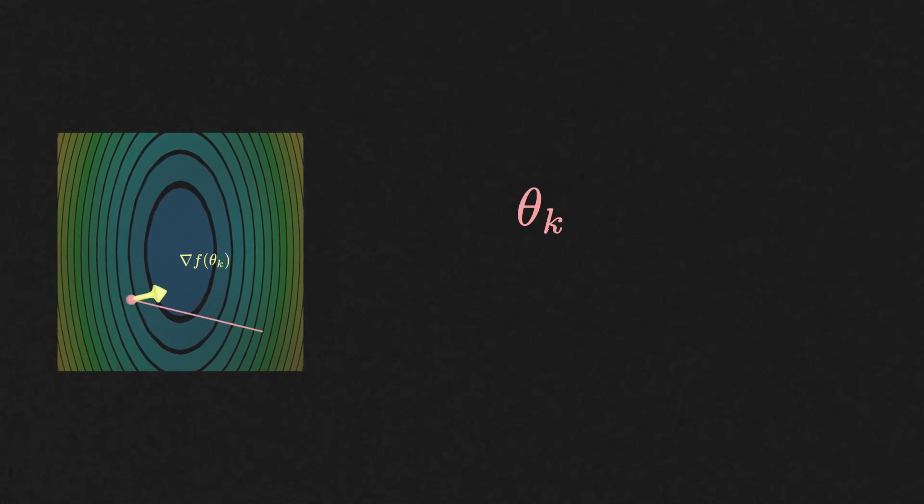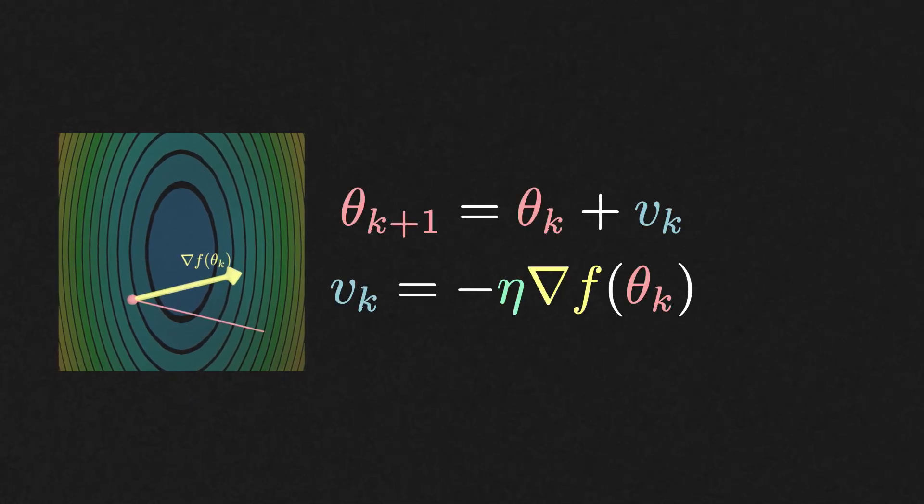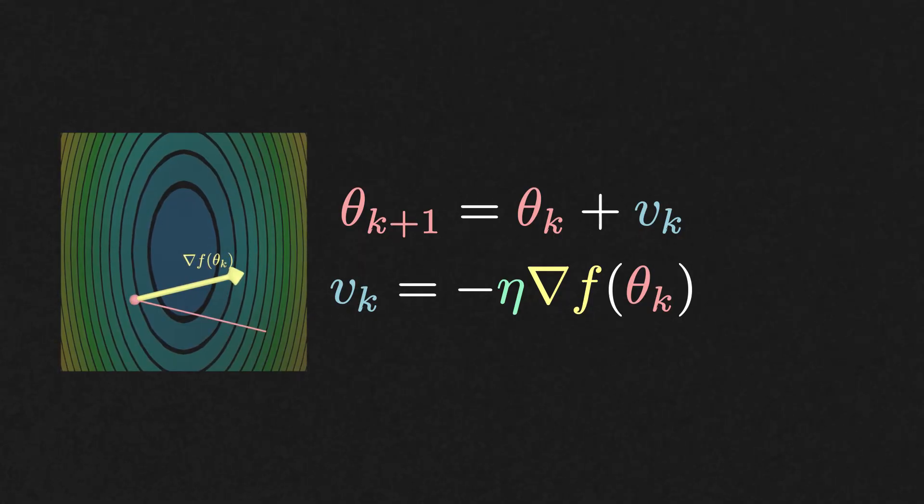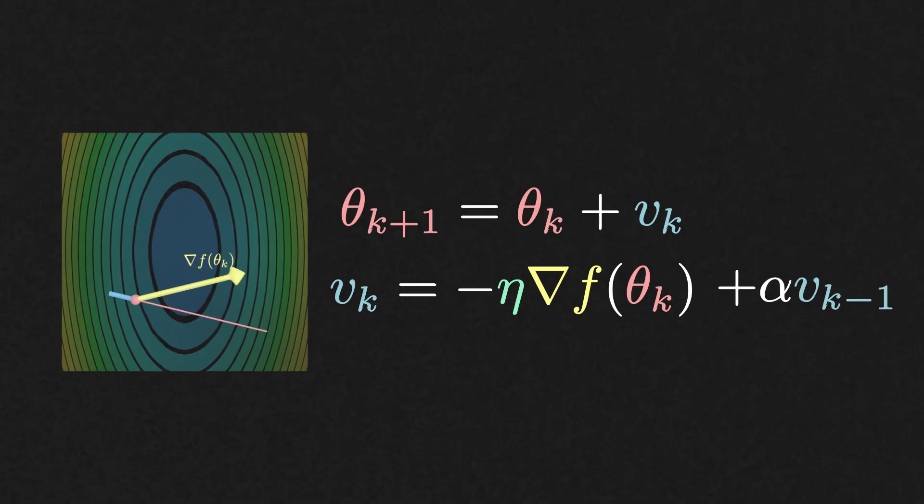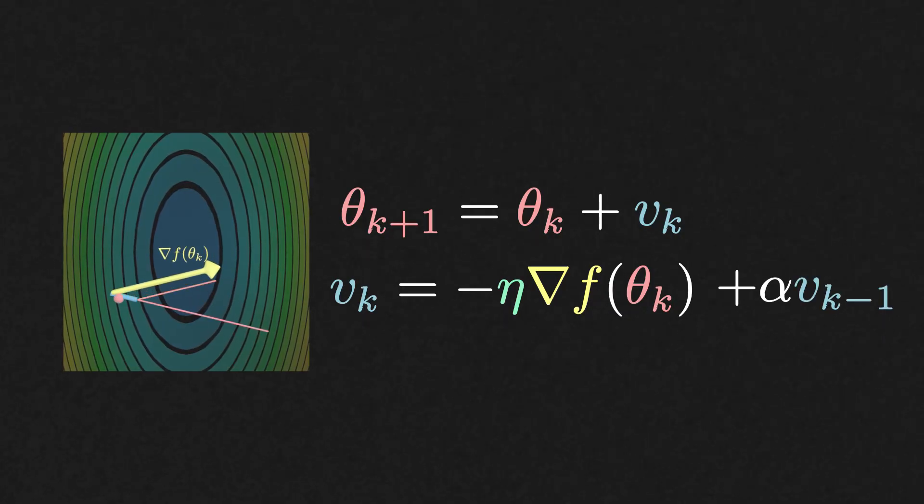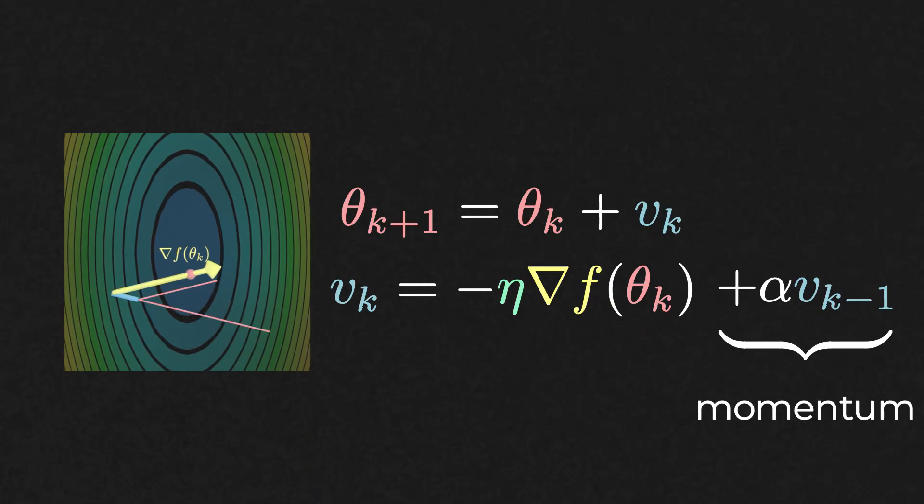When you are at iteration k, you compute the gradient just as you would in vanilla gradient descent. But now instead of just following this gradient right away, you first extrapolate the previous direction a little bit further, and only then you follow the negative gradient. And you can think of this extrapolation step as momentum carrying from previous iterations.